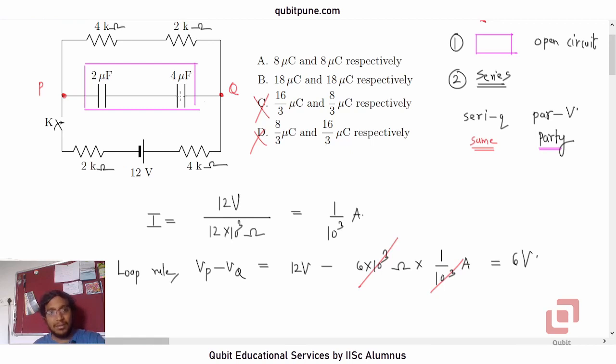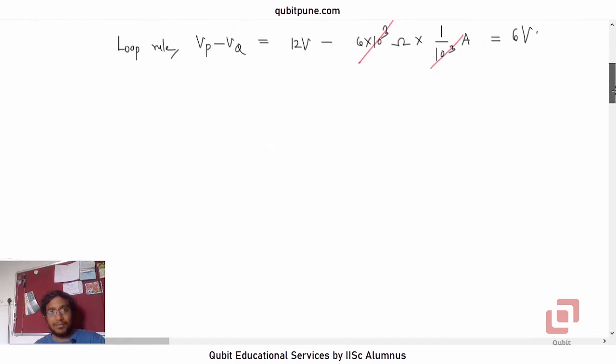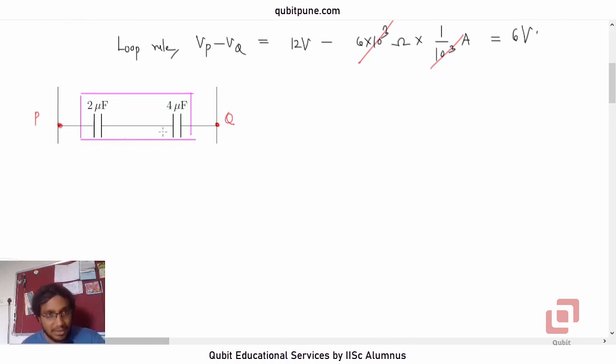Now let us focus on that part of the circuit. VPQ is 6 volts. Now because the capacitors are in series, the charges will be same, but the potential differences or drops will get added.